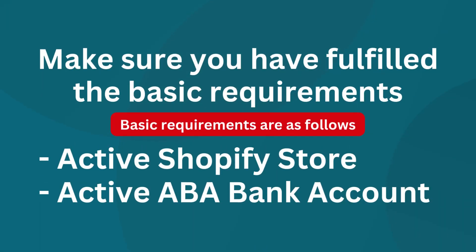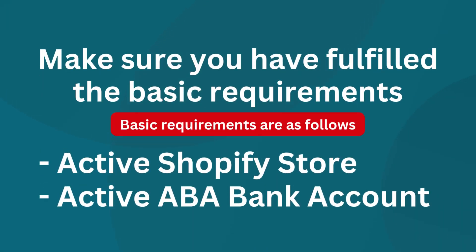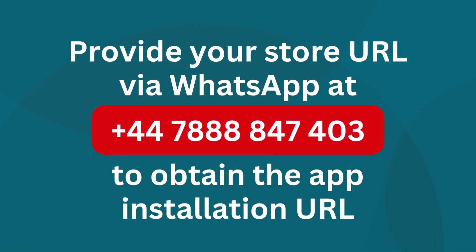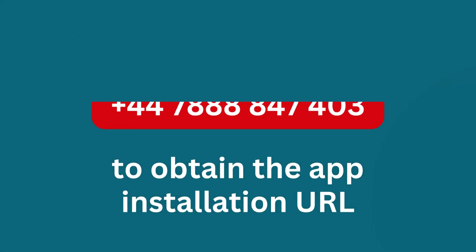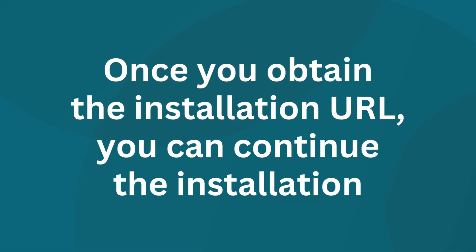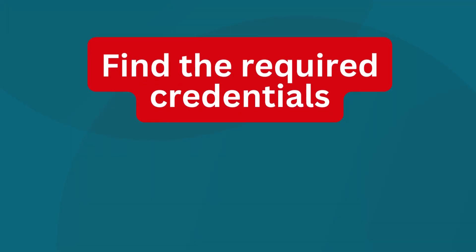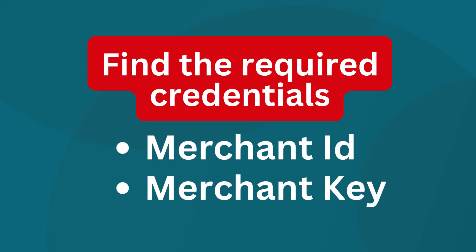Make sure you have fulfilled the basic requirements: an active Shopify store and an active ABA account. Provide your store URL via WhatsApp to obtain the app installation URL. Once you obtain the installation URL, you can continue the installation. Find the merchant ID and merchant key from your ABA payment account.